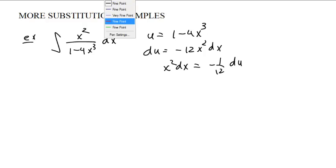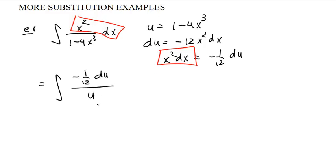And this right up here, x squared dx is this. We can turn it into negative 1 twelfth. So up top, we have negative 1 twelfth du. And down below, the whole 1 minus 4x cubed becomes just a u.